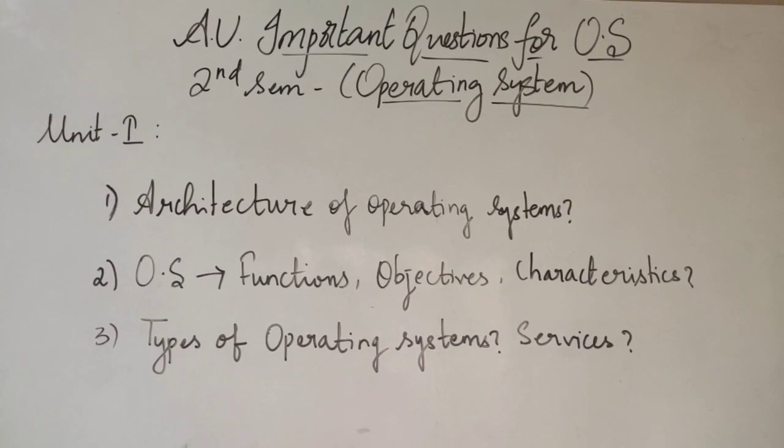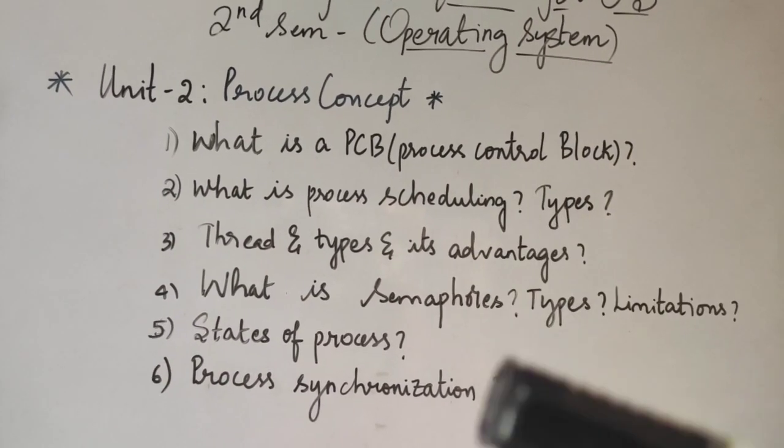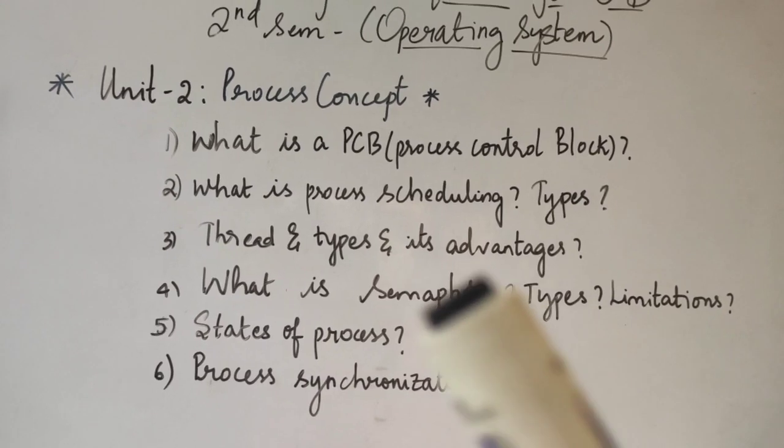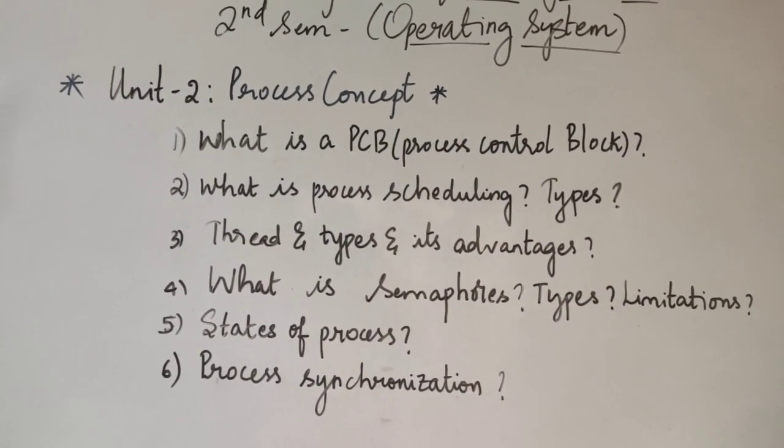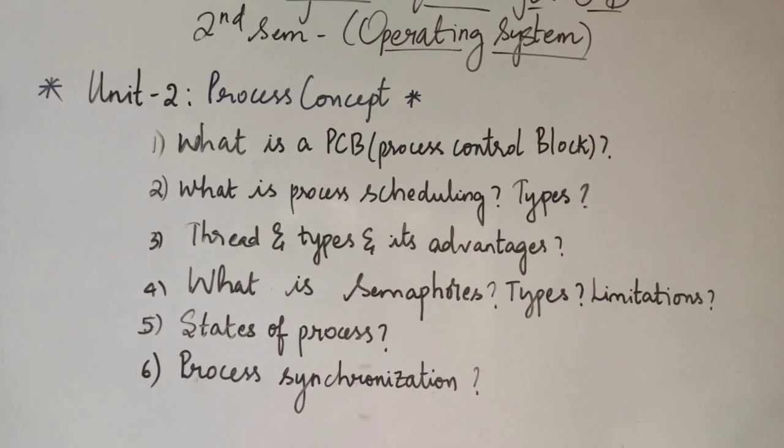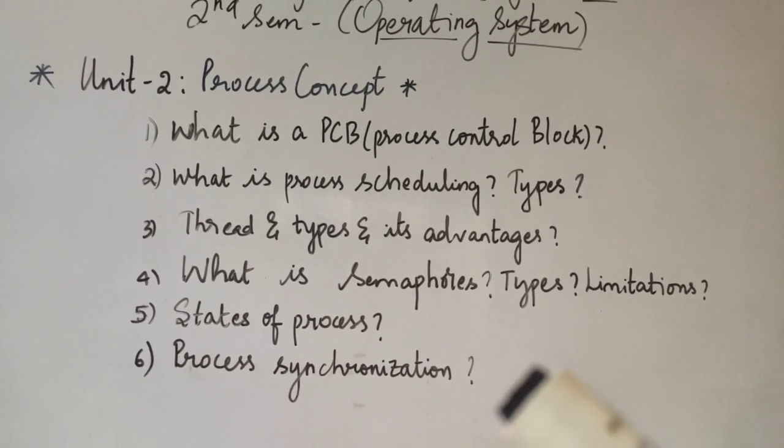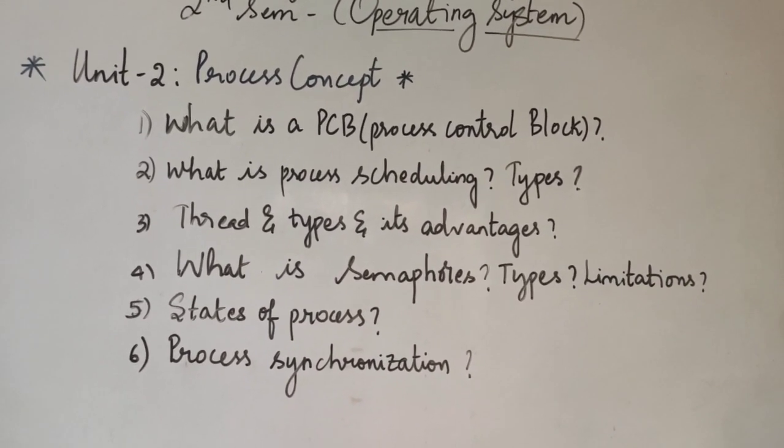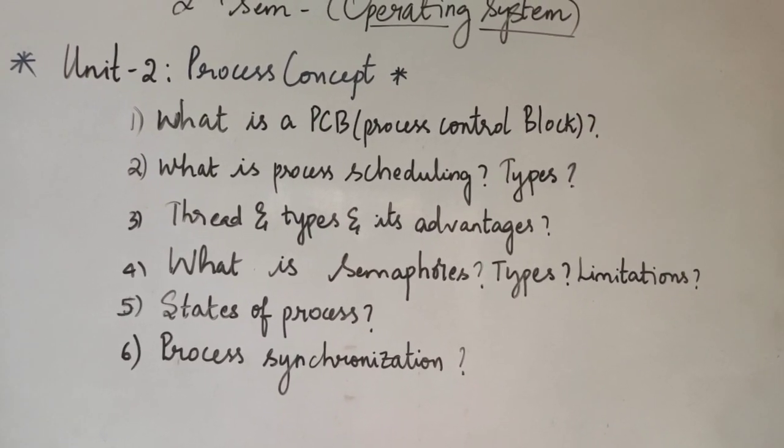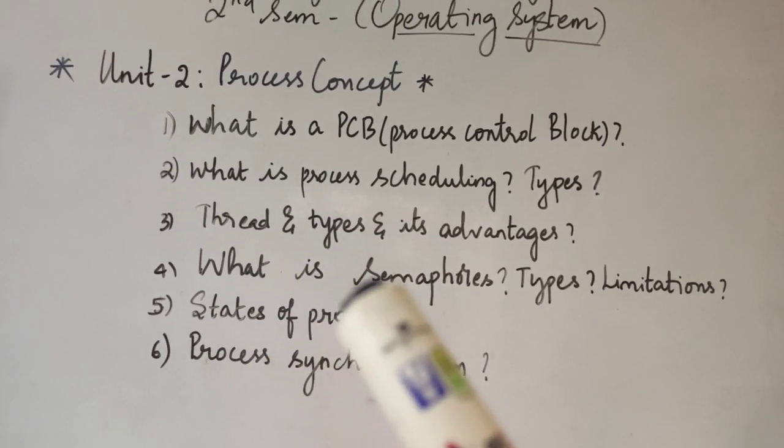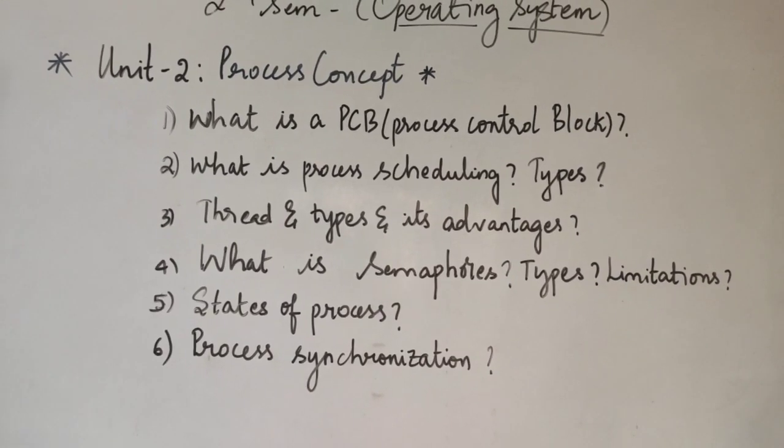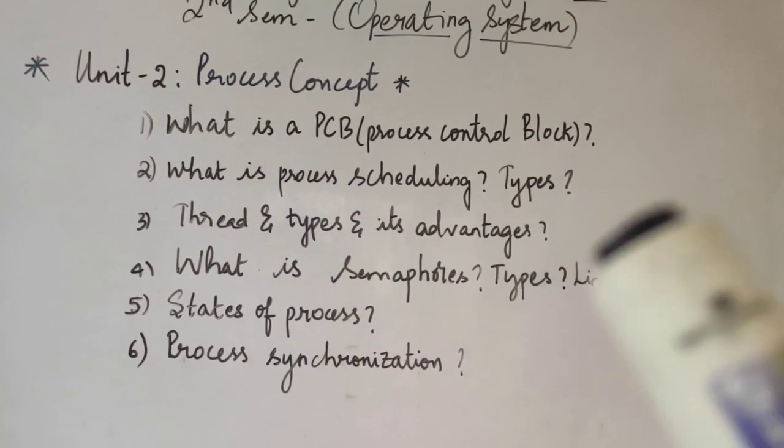Now let us look at the unit 2 important questions. These are the six important questions I filtered from unit 2, which is process concept. The first important is what is the PCB process control block. Second question is what is process scheduling and its types.